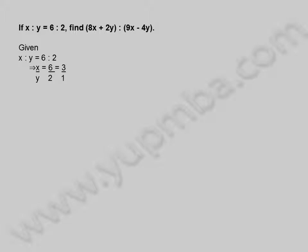Let us see another example. If x is to y is equal to 6 is to 2, find 8x plus 2y is to 9x minus 4y. Given x is to y is equal to 6 is to 2. This implies x by y equals 6 by 2, which equals 3 by 1. Therefore, x is equal to 3y.